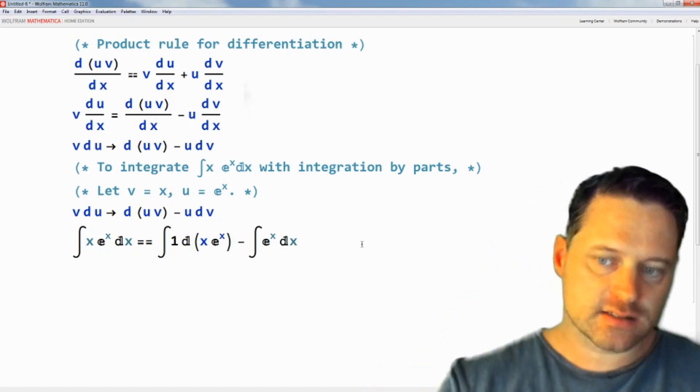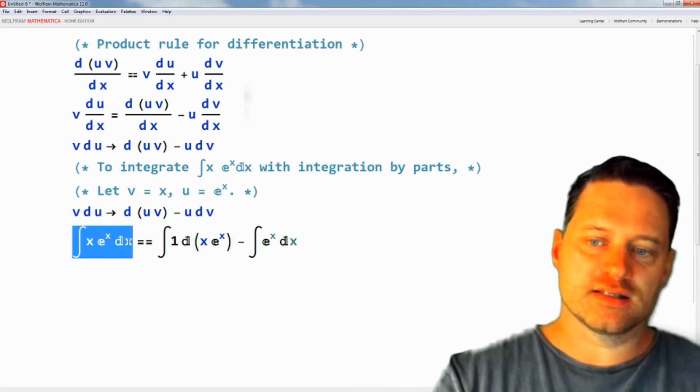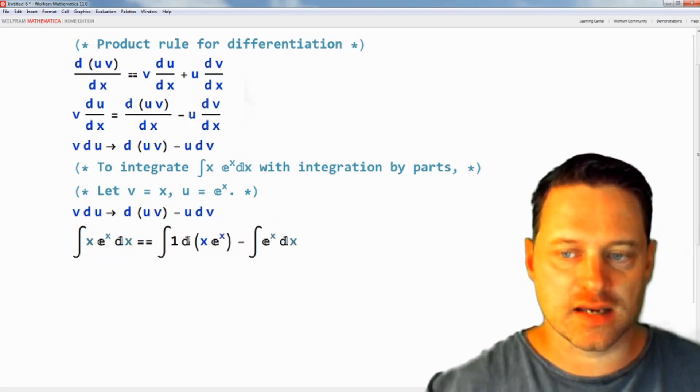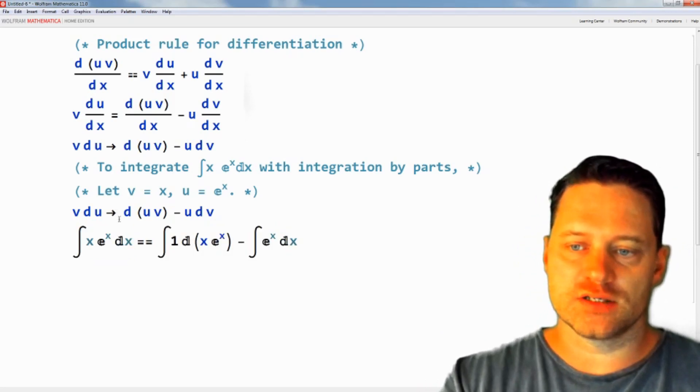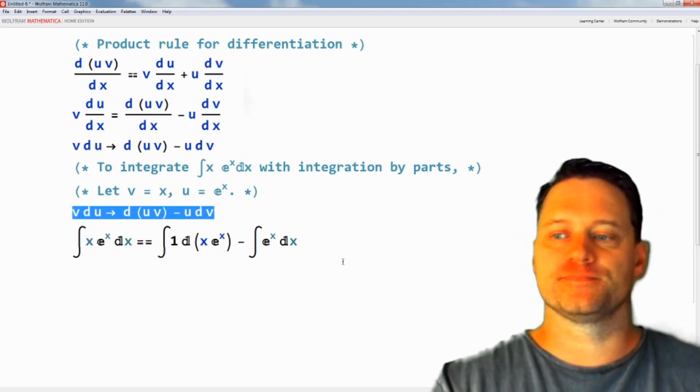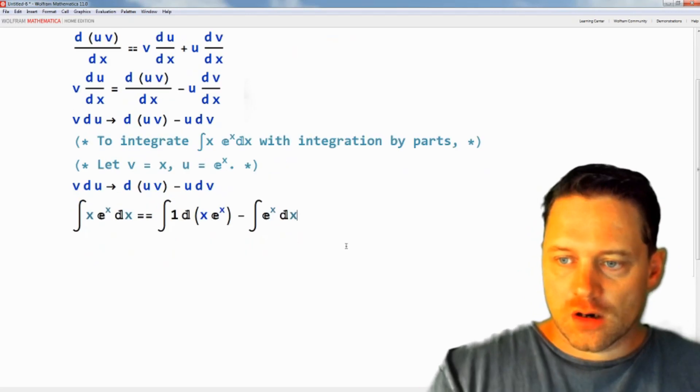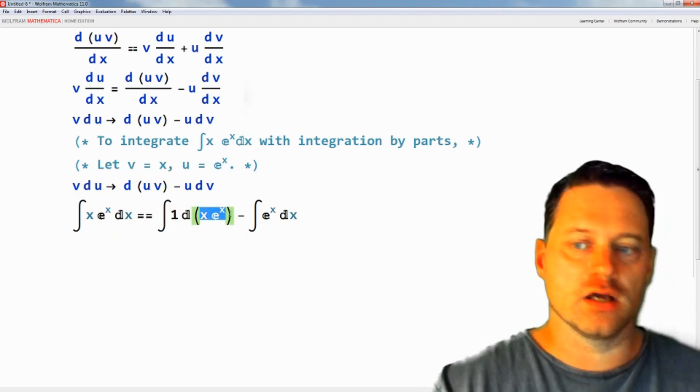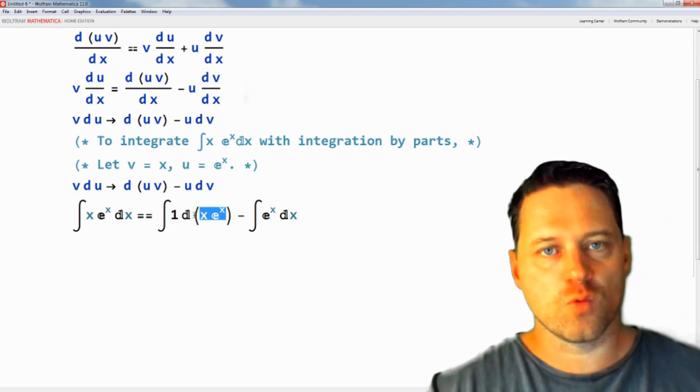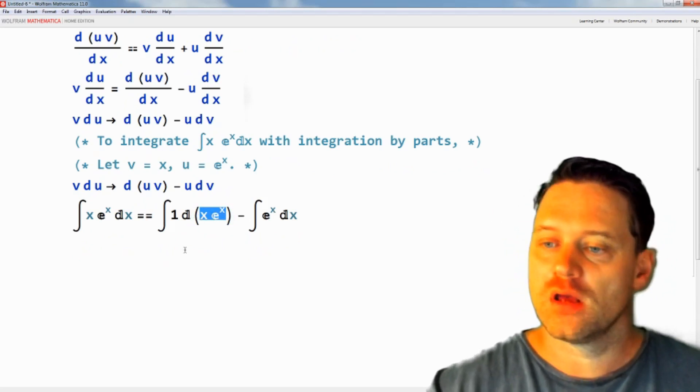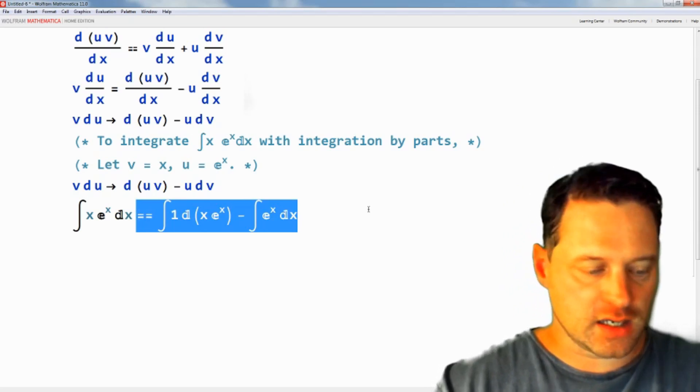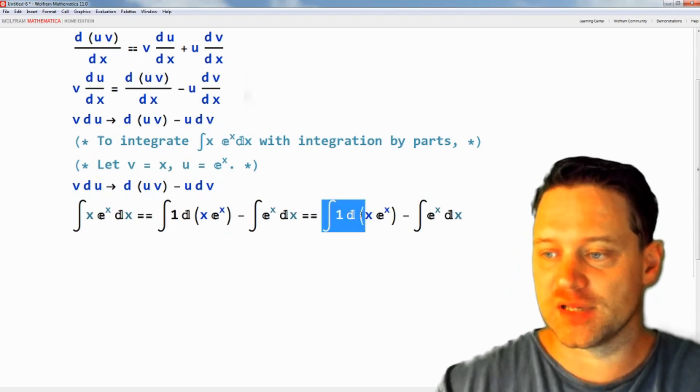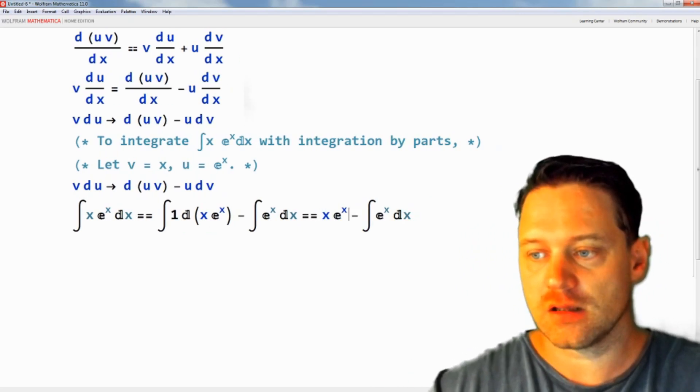Now this says that this integral here can be calculated by integrating each of these and taking their difference, using this rule right here, integration by parts. Now this you can think of as another letter, let's call it y. The integral of 1 with respect to y is y, so I can calculate this first integral on the left as simply x e to the x.